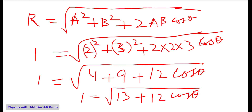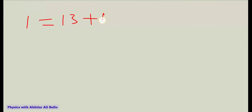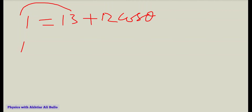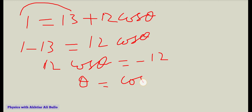To remove the square root, squaring both sides: 1 equals 13 plus 12 cosθ. Moving 13 to the other side: 1 minus 13 equals 12 cosθ, so 12 cosθ equals minus 12, therefore cosθ equals minus 1.